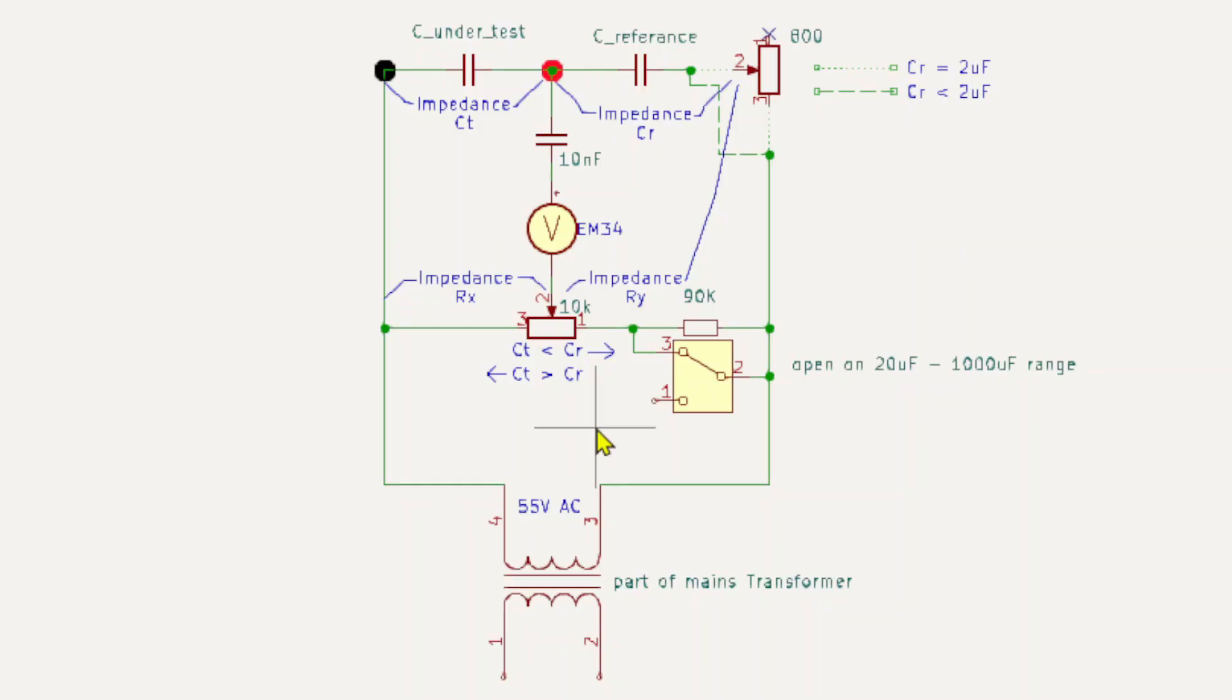Now what happens on the extended range, which is above the 20 microfarad to 1000 microfarad range, is that arm becomes active. The switch is open for that range, and so the 90k is switched in. So now we have a total impedance across here of 100k, and that means we've effectively multiplied the ratio. This arm is now, the pot can go from 100k this side to 10k on that side.